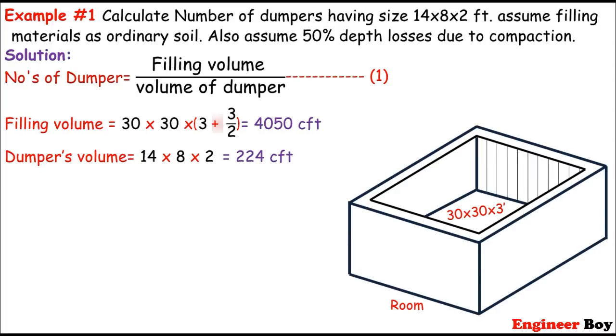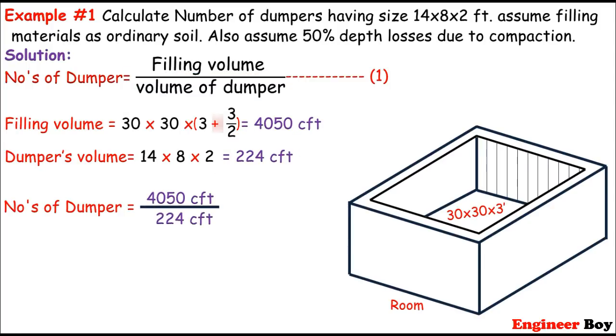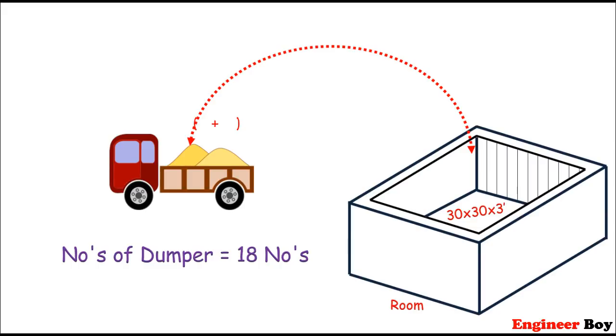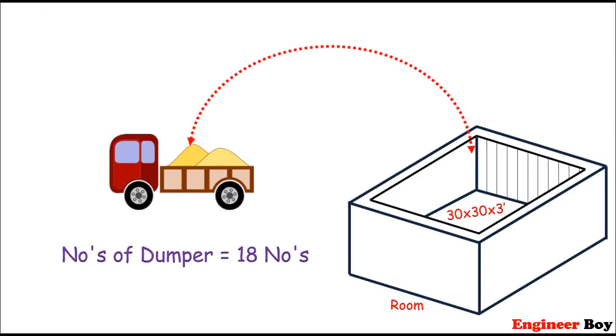Now we can calculate the number of dumpers using the same equation, equation 1. The number of dumpers must be the filling volume, that's already known, we have done this a few minutes ago, which is 4050 CFT divided by the volume of dumper. It's already known, 224 CFT. So if you divide 4050 by 224, we can get the number of dumpers equals 18.08 numbers, or you can say just the number of dumpers equals 18 numbers. So for the same room, you should add another 18 number of dumpers, which size must be 14 times 8 times 2 feet. So this is how we can calculate the number of dumpers required for filling.